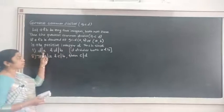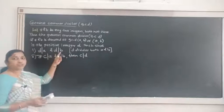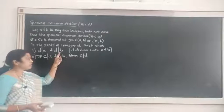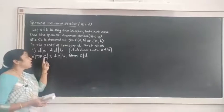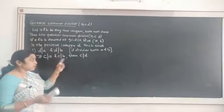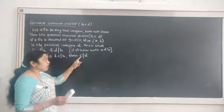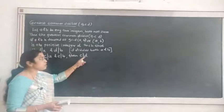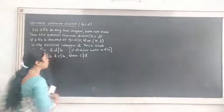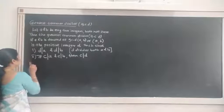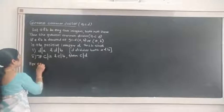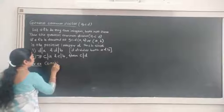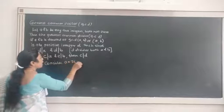The second condition is that if C is any other common divisor, that is if C divides A and C divides B, then C must divide D — that is, D is the greatest common divisor. So D should divide A and B, making it a common divisor, and any other common divisor C must divide D. For example, consider two integers 24 and 40.